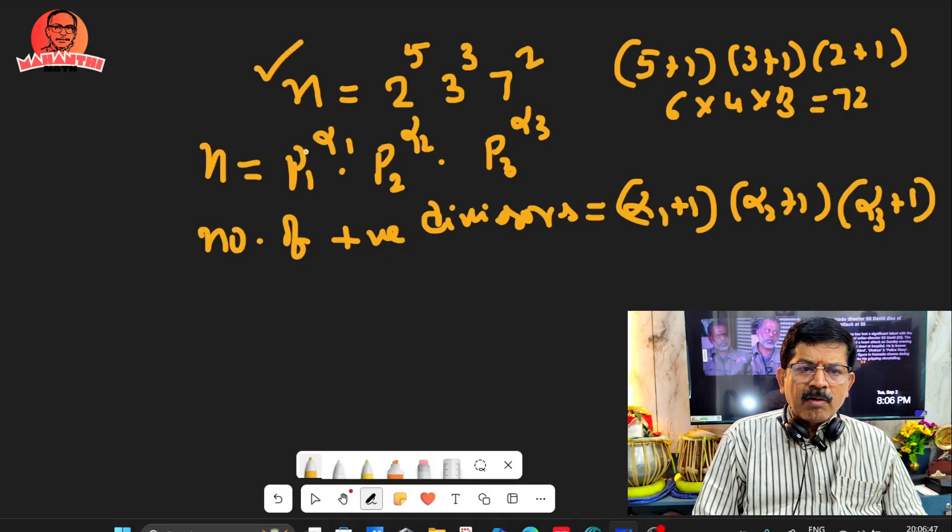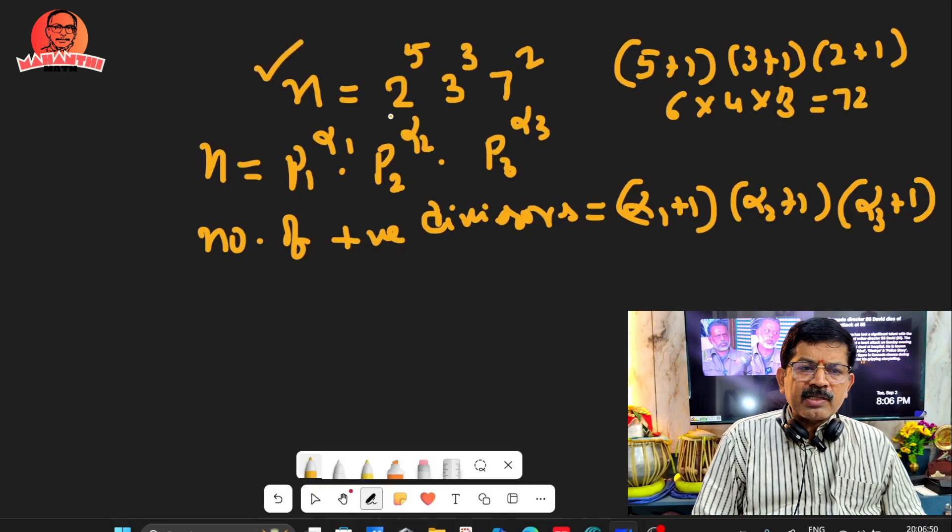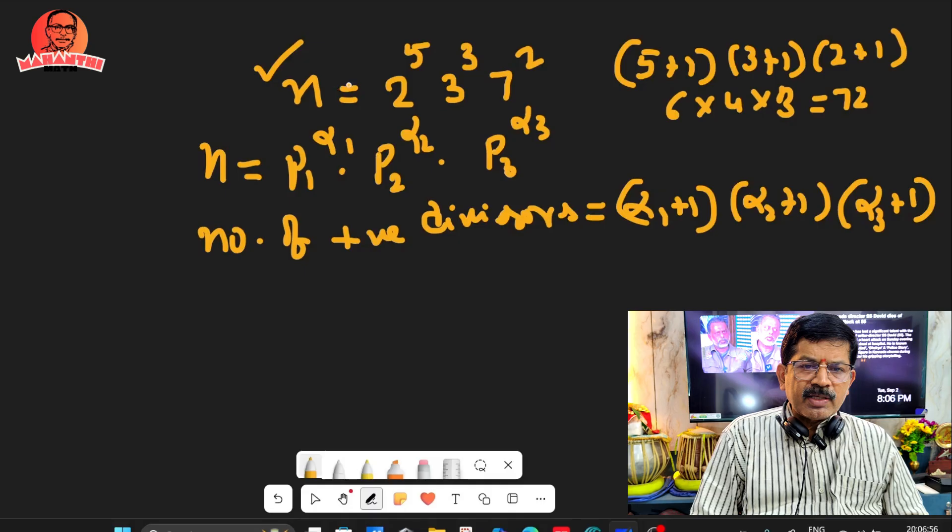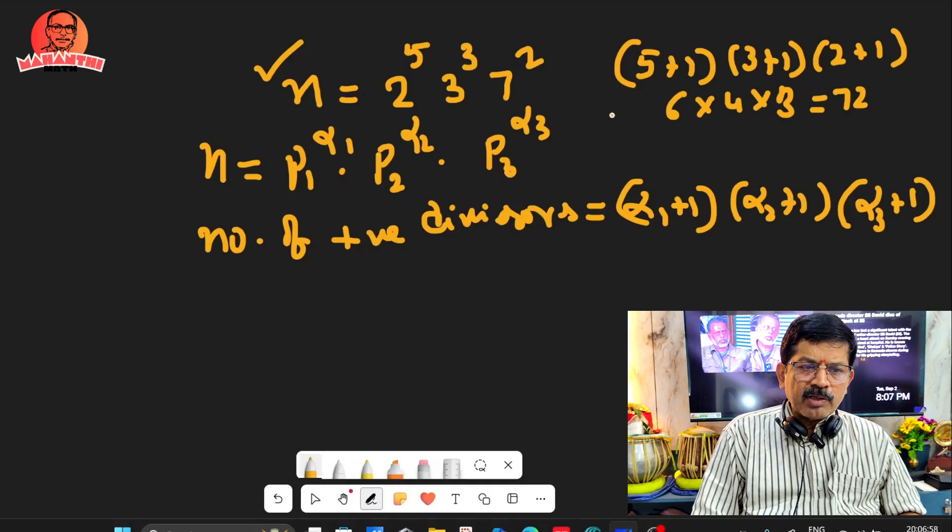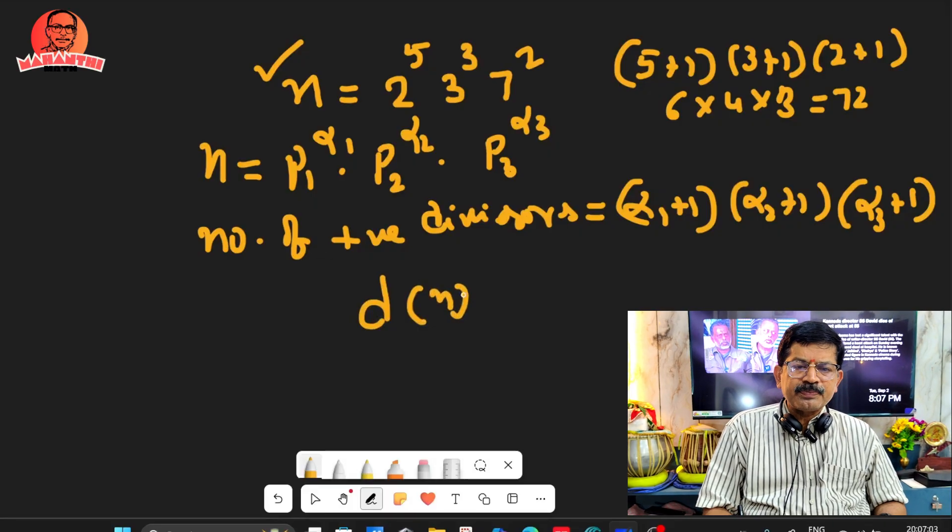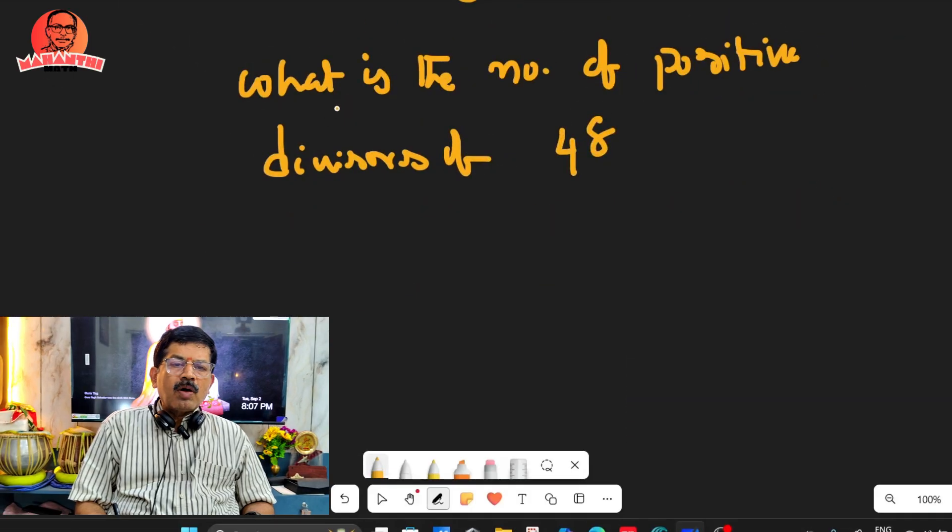In these factors, 1 and the number itself are included. So the number of positive divisors of n equals 72. You can write in notation d(n) = 72.